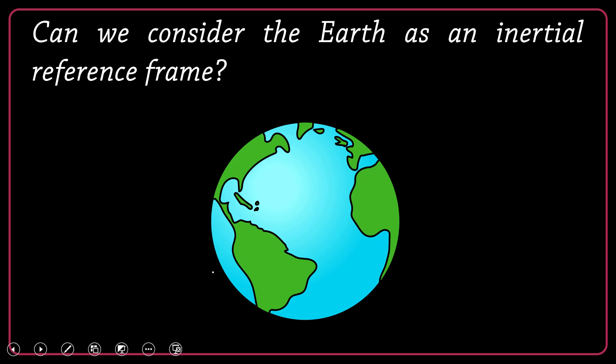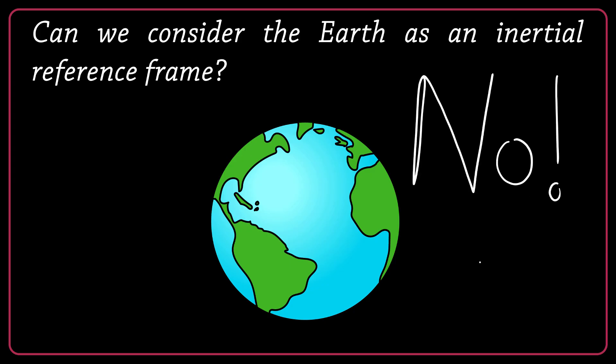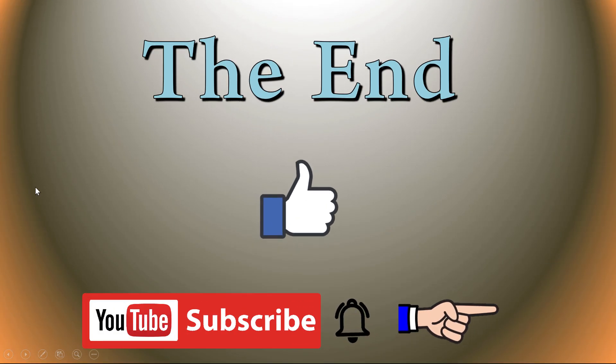Can we consider the Earth as an inertial reference frame? The answer is a big no. The Earth has a spin, and objects on it undergo rotational motion, making it a non-inertial system. Furthermore, the Earth orbits the Sun, which brings another non-inertial reference frame. However, when solving problems on Earth, we use an approximation — we ignore those fictitious forces. Thank you very much for being with me. Take care, see you in the next video.